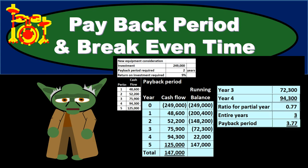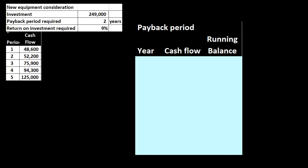In this presentation we will take a look at the payback period and break-even time. The scenario is the consideration of the purchase of a new piece of equipment with an initial cost — an initial outflow of $249,000. The payback period required is two years, meaning we have to get the cash flow back within that two-year time period. The return on investment required is nine percent — we need a nine percent return in order to accept the investment.